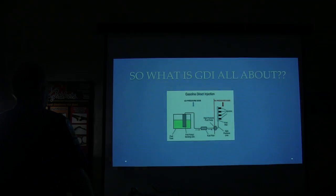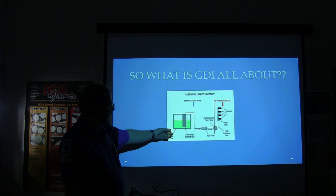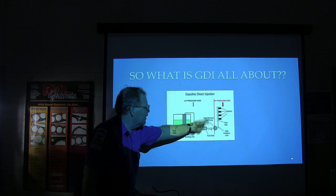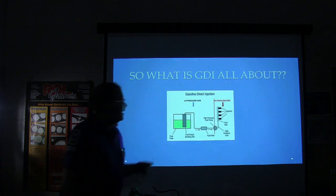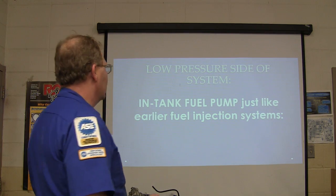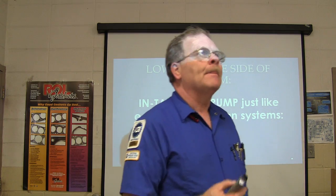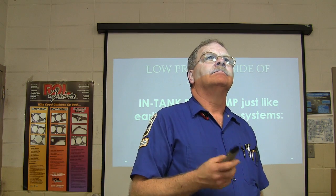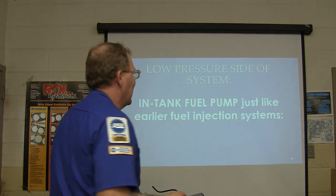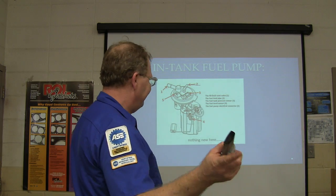Looking at a basic GDI system diagram: there's a conventional low-pressure fuel pump just like in any system. But where it changes is at the high-pressure fuel pump, which feeds the common rail. The high-pressure pump has a solenoid controlled by the engine controller. It monitors both high-pressure and low-pressure sides. Low-pressure is approximately 80 PSI. The low-pressure side looks similar to a port fuel injection system — nothing dramatically different there.